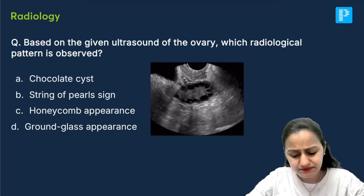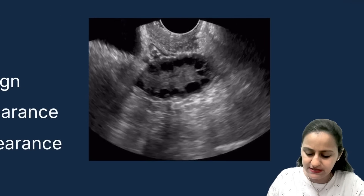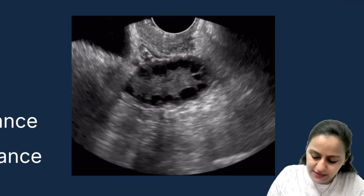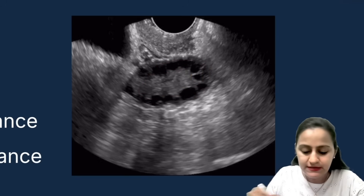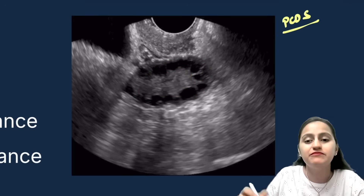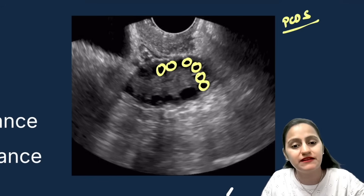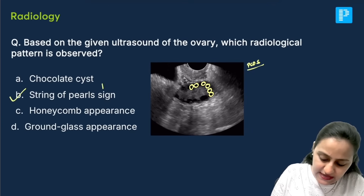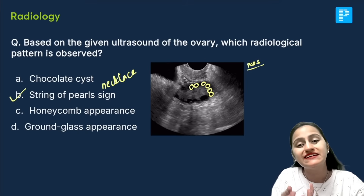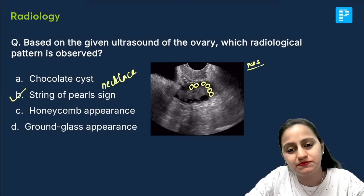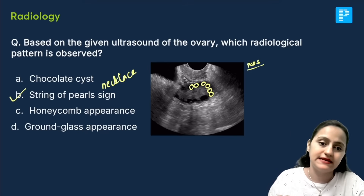The next question asks: based on the ultrasound, what pattern is observed here? This is another question on a sign. What we are seeing is the ovary, where all the follicles are arranged in the periphery one after the other, with an increase in the central stroma. These findings are suggestive of PCOS, and this appearance — where you see follicles arranged one after the other in the periphery — is called string of pearls sign or the necklace sign. In PCOS, the increased central stroma pushes the follicles to the periphery, and all are small follicles with no dominant follicle.